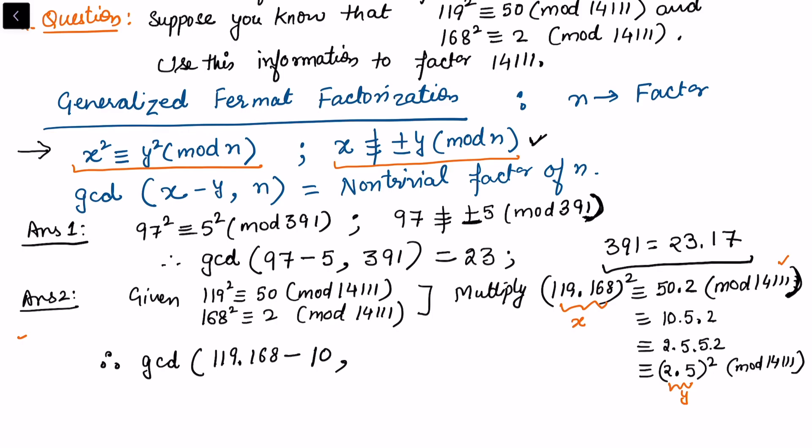This gives us 103, so 103 is a non-trivial factor. Therefore, 14111 = 103 × 137. This gives the factorization corresponding to the integer.